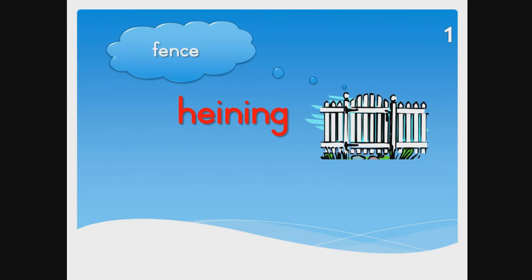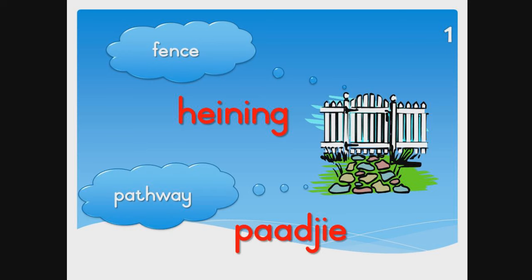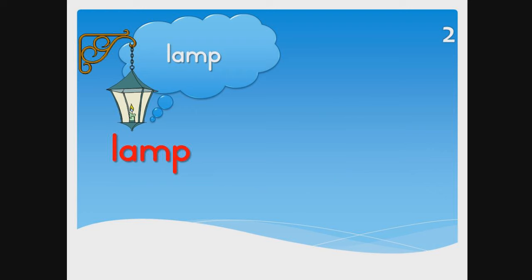Fence — heineng, heineng. Pathway — bai-gi, bai-gi. Lamp — lump, lump.